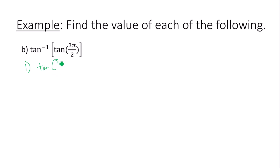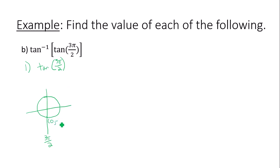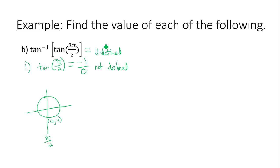Is tangent of 3π/2 defined? That would be 270 degrees, the bottom of the unit circle, which has the ordered pair (0, -1). Tangent of 3π/2 equals sine over cosine, which is -1 over 0, and that is not defined. So I can't pursue this question any further since the inner trig function is not defined at 3π/2. The answer is undefined — condition one was not met.